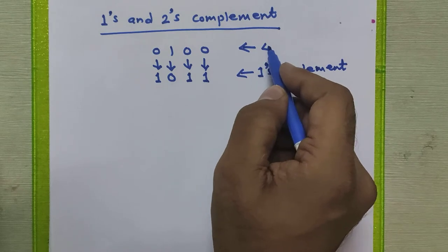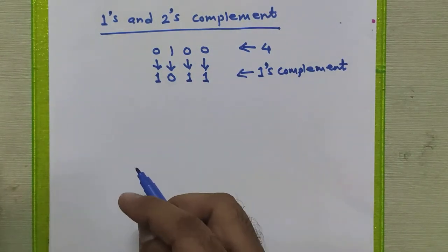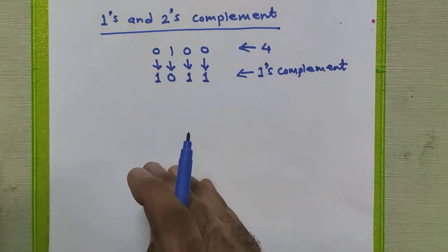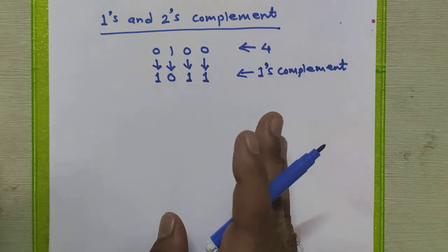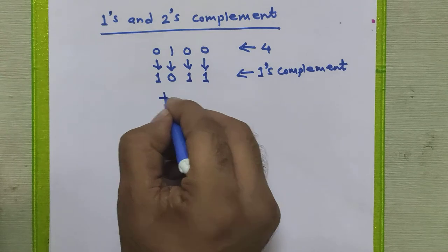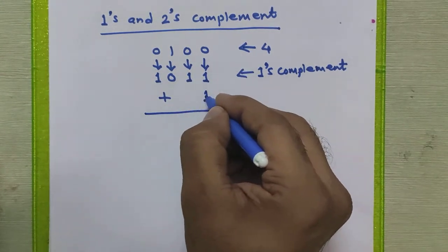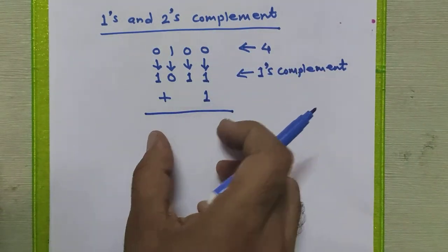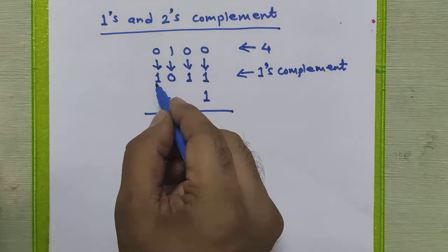To find the twos complement of 4 in binary, we first find the ones complement. After finding the ones complement, we just have to add 1 to it. Adding 1 to the ones complement gives you the twos complement of the given binary number.